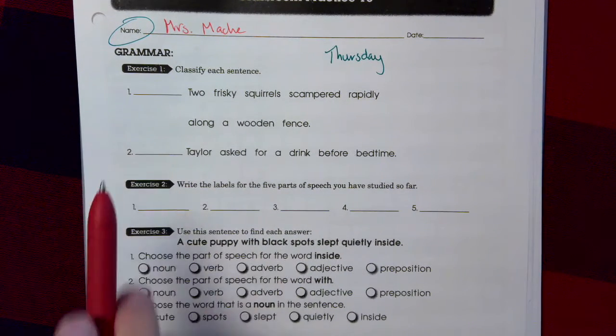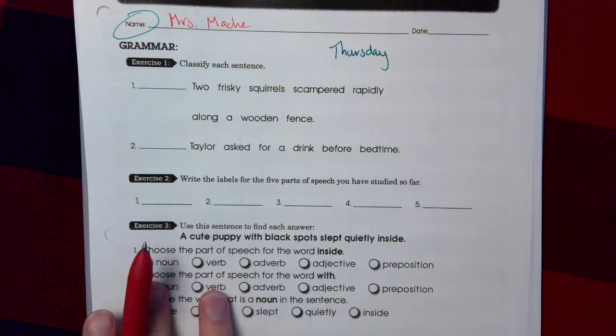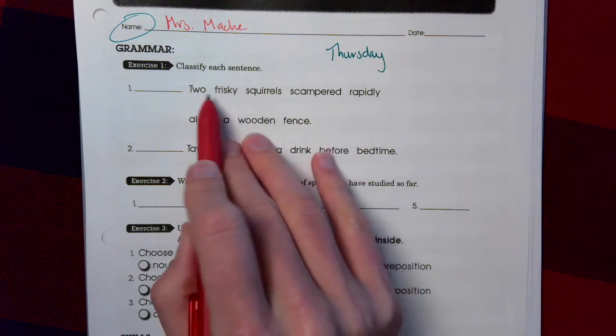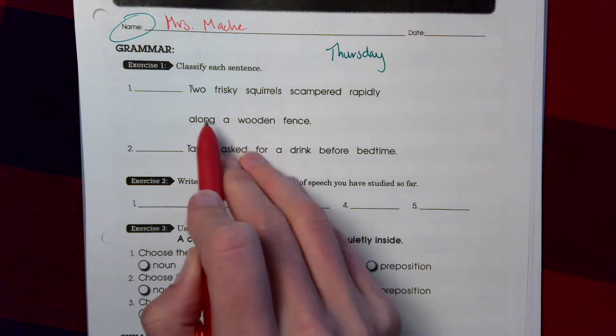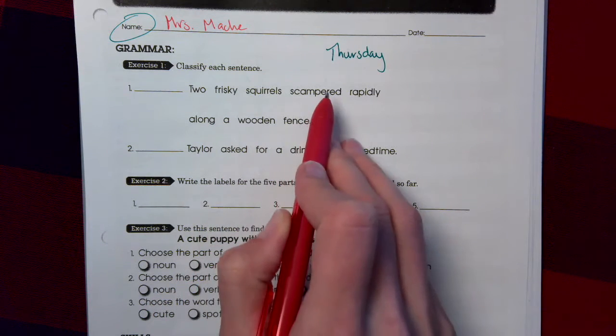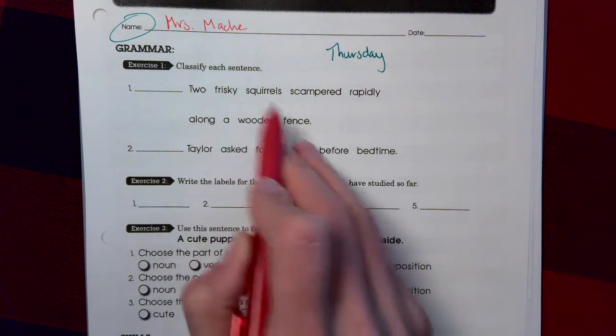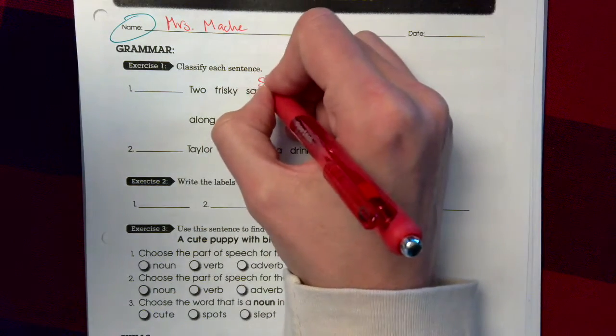Sentence 1 we'll do together. Sentence 2 you'll do a little bit of it by yourself. Sentence 1: Two frisky squirrels scampered rapidly along a wooden fence. What scampered rapidly along a wooden fence? Squirrels. Subject noun.